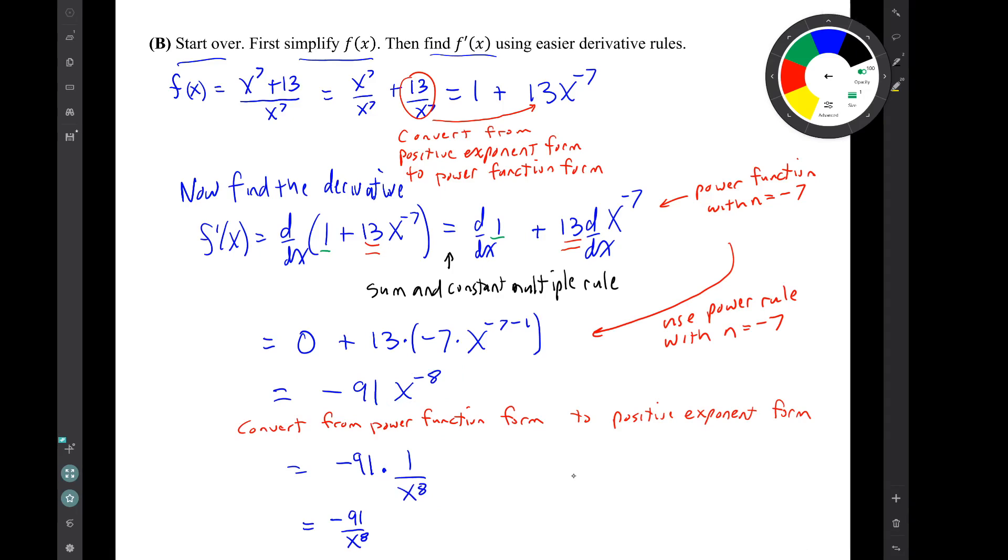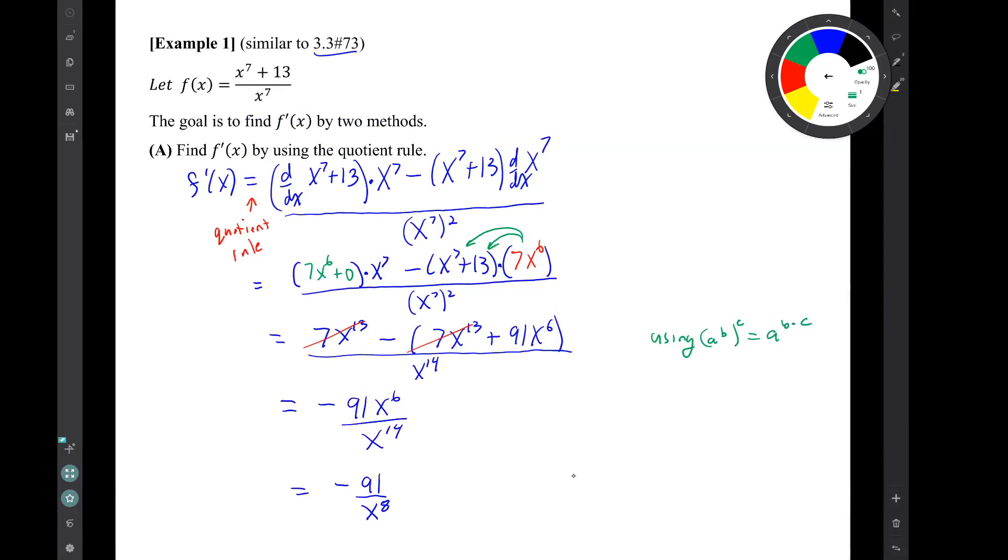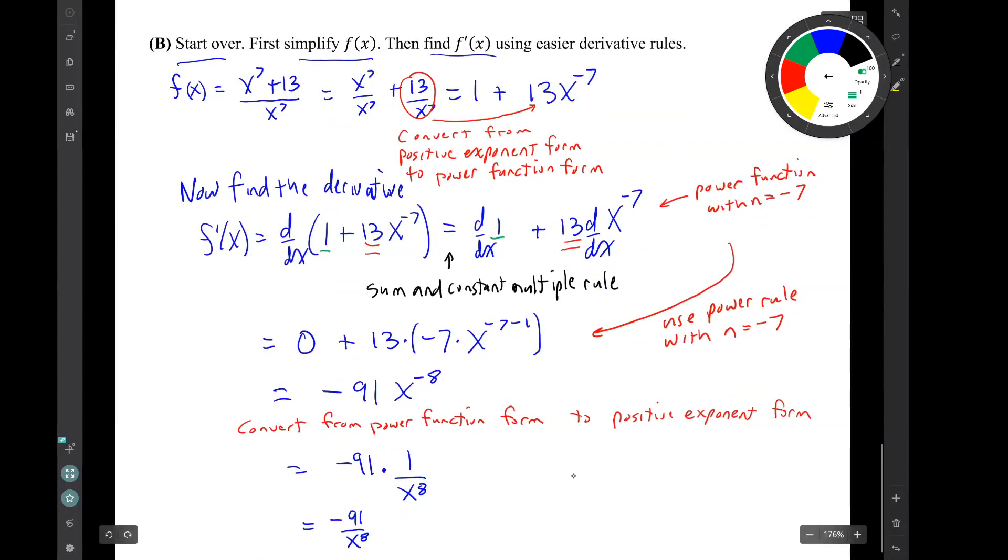So compare this method to our previous part A. Part A, we use the quotient rule, which is one of the tricky rules with lots of potential for mistakes. This solution used basic operations, rewriting the function, simplifying the function. We did that first. And then the derivative was our basic derivative rules. We use the power rule and we use the constant function rule for our derivatives. We use the sum and constant multiple rule, the basic derivatives. So solution B, where we simplify the function first and then use simpler derivative rules, is definitely the better solution.